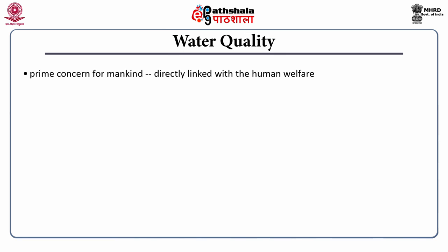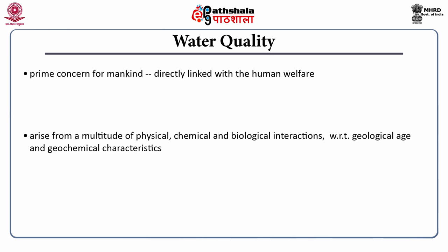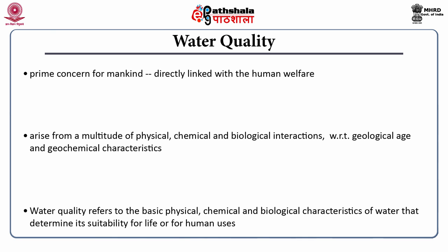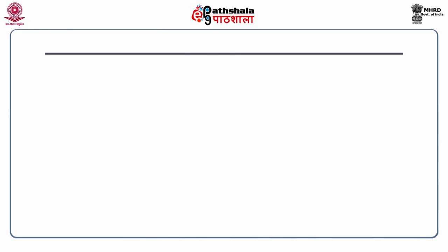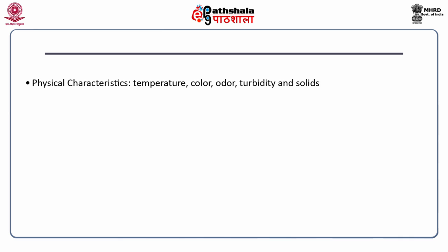The quality of water is of prime concern for mankind since it is directly linked with human welfare. Water quality characteristics of aquatic environments arise from a multitude of physical, chemical and biological interactions with respect to their geological age and geochemical characteristics. Water quality refers to the basic physical, chemical and biological characteristics of water that determine its suitability for life or for human uses. The acceptable quality of water varies with its intended use. The characteristics of water can be classified into three broad categories: physical characteristics including temperature, colour, odor, turbidity and solids.